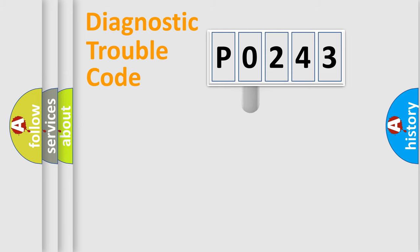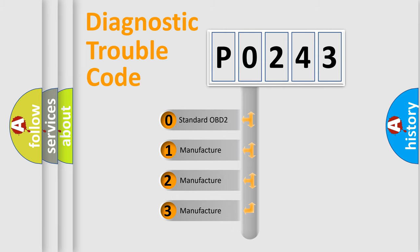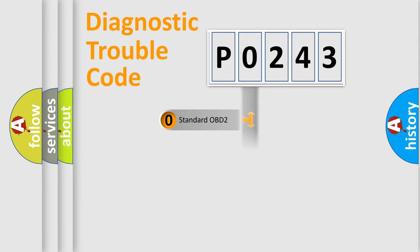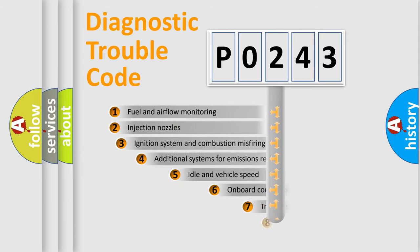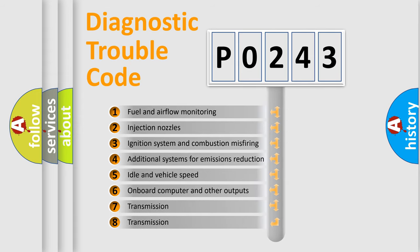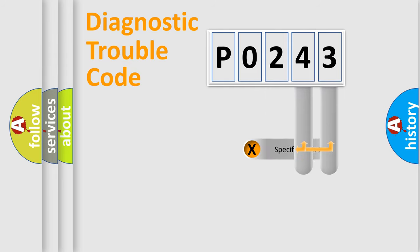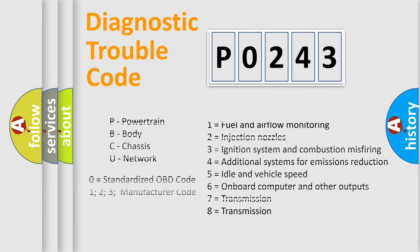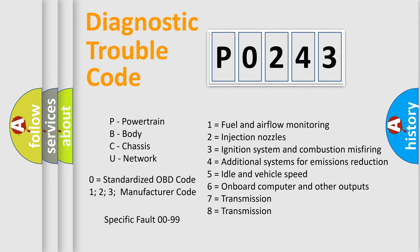This distribution is defined in the first character of the code. If the second character is expressed as 0, it is a standardized error. In the case of numbers 1, 2, or 3, it is a more manufacturer-specific expression of a car-specific error. The third character specifies a subset of errors, and this distribution is valid only for the standardized DTC code. Only the last two characters define the specific fault of the group — valid only when the second character is 0.